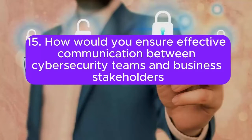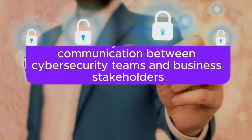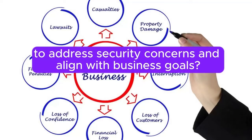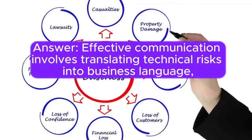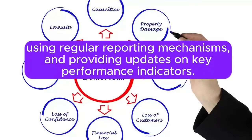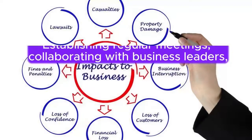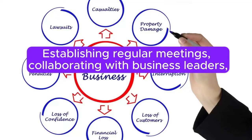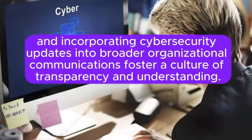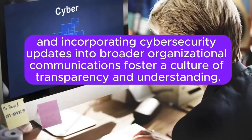Question 15: How would you ensure effective communication between cybersecurity teams and business stakeholders to address security concerns and align with business goals? Answer: Effective communication involves translating technical risks into business language, using regular reporting mechanisms and providing updates on key performance indicators. Establishing regular meetings, collaborating with business leaders, and incorporating cybersecurity updates into broader organizational communications foster a culture of transparency and understanding.